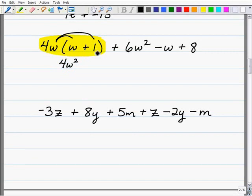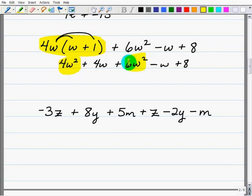Now we have 4w plus 1, or excuse me, 4w times 1. So it's going to be plus 4w. And we have plus 6w. We're just going to rewrite the remainder of the expression. And now we're going to go ahead and take a look at the terms. We have 4w squared and I have a 6w squared. They're like terms. I have a 4w here. I have a minus w. Those are like terms. And then I'm left with an 8 all over here. So those are your situations. We have two like terms. Two sets of like terms.